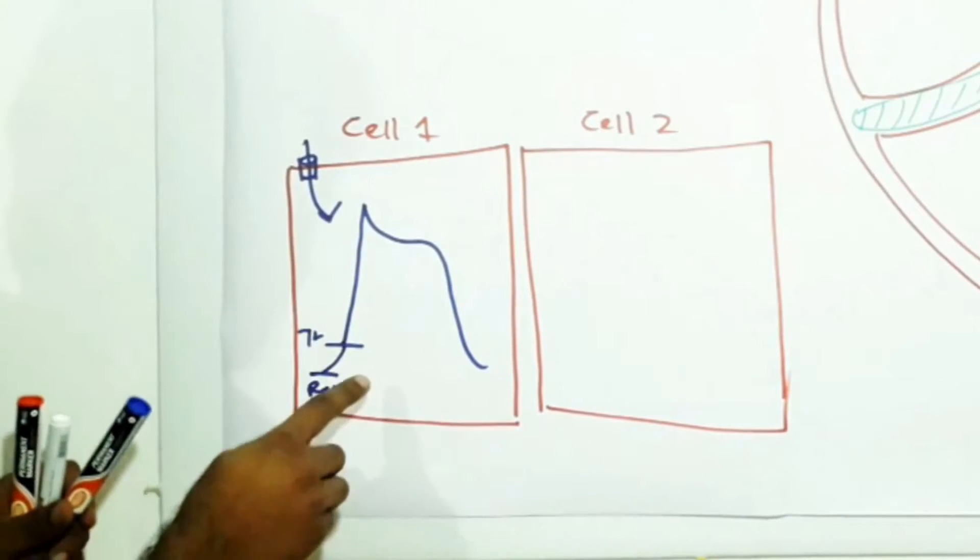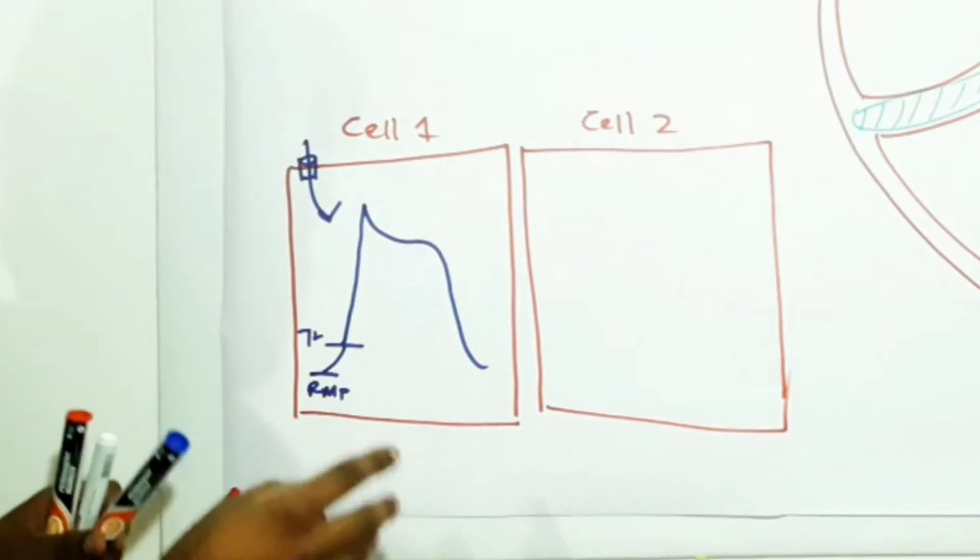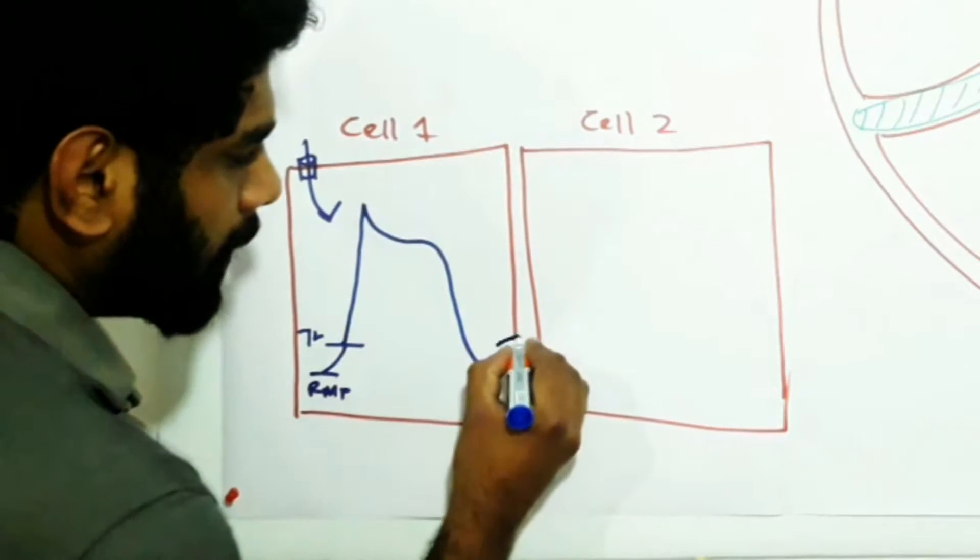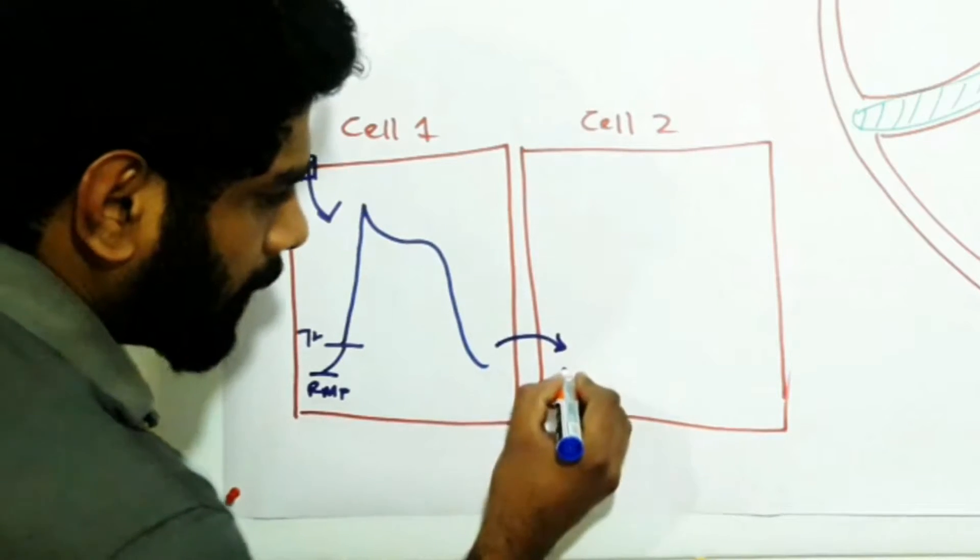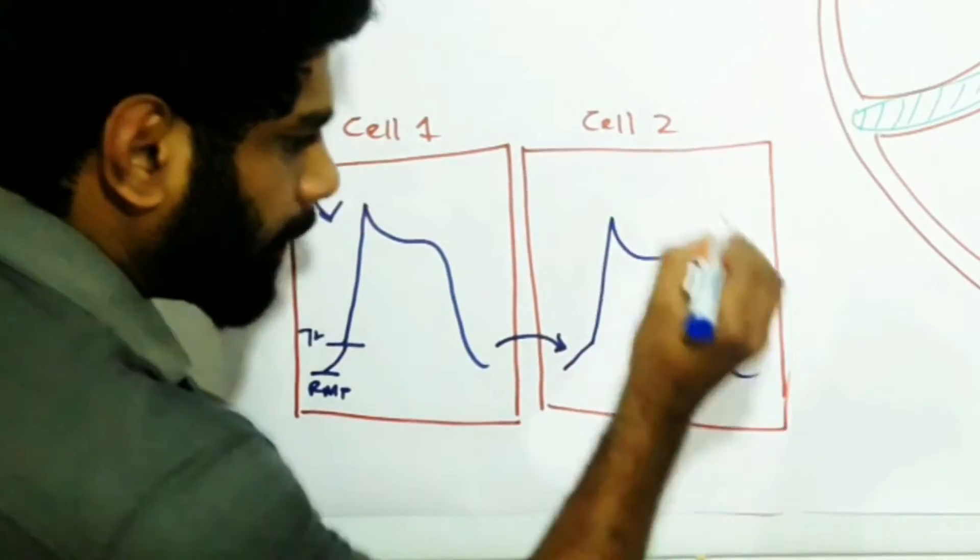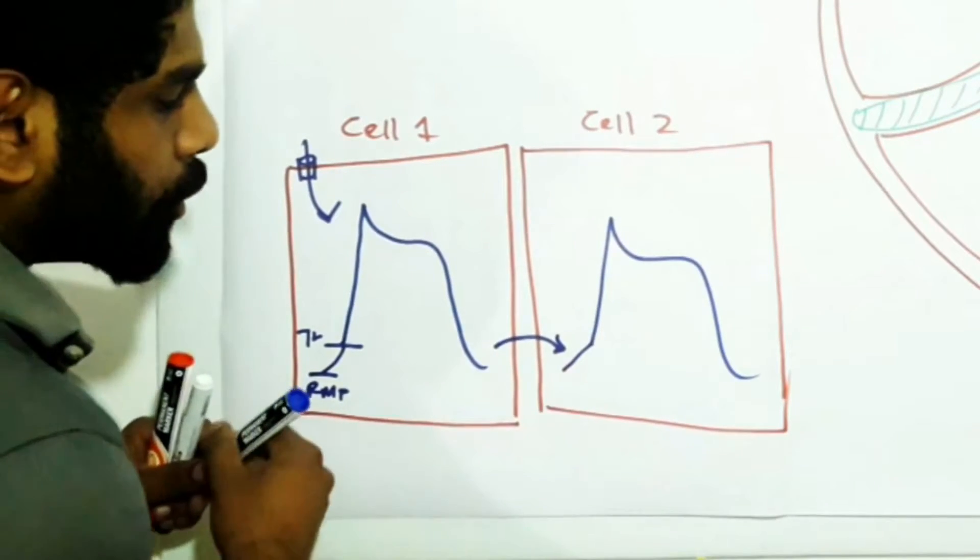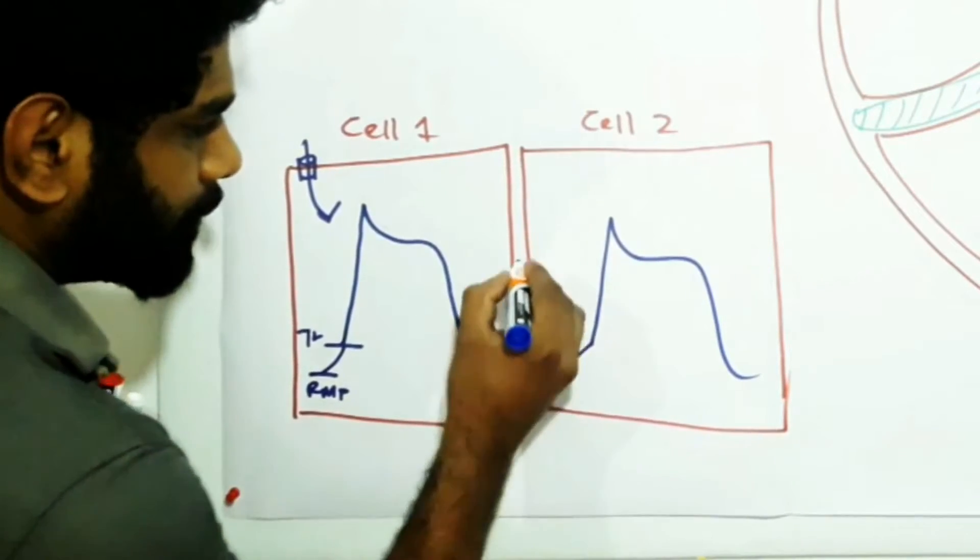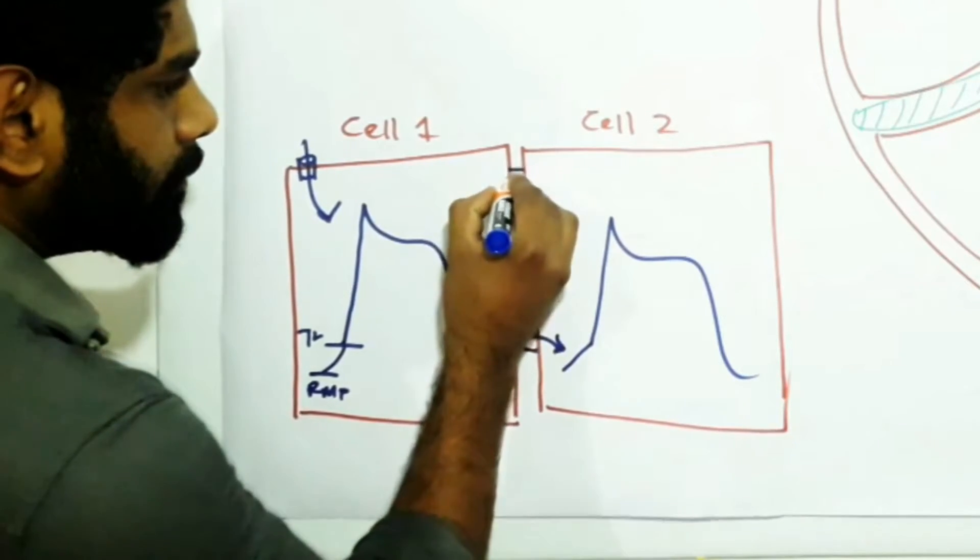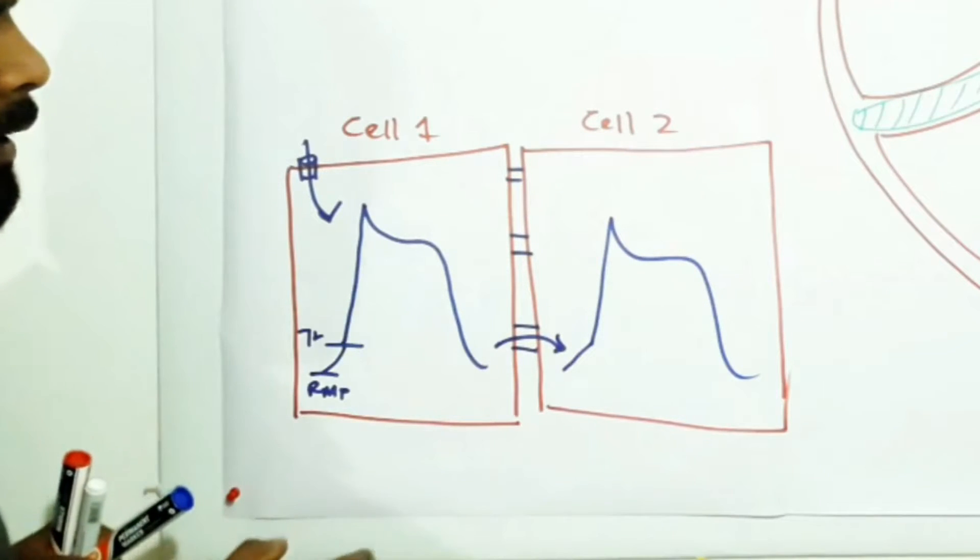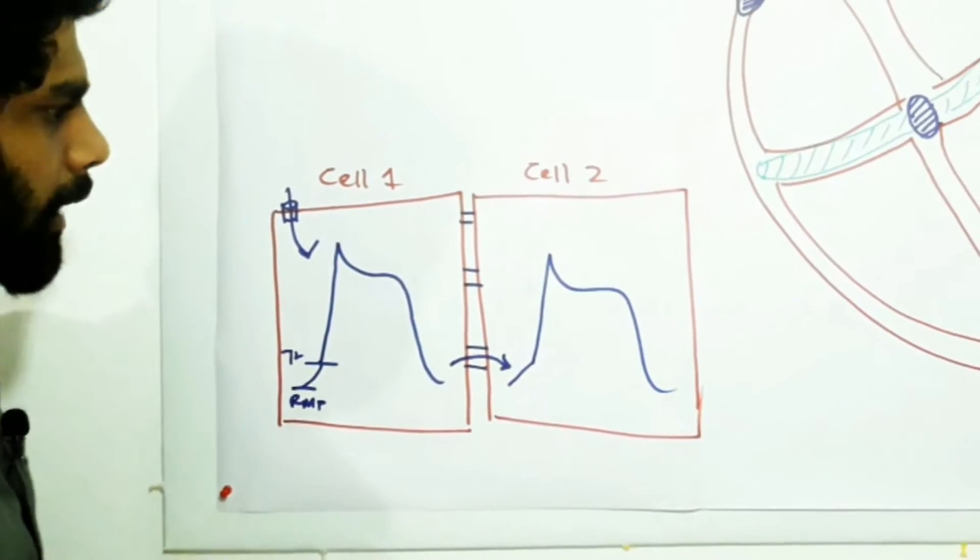During the depolarization, intracellular cation level increases. Some of these cations enter the next cell and depolarization starts to occur. These cations enter the next cell through the gap junctions. These gap junctions help the myocardium to propagate the electrical impulse.